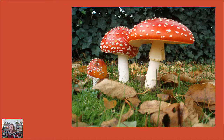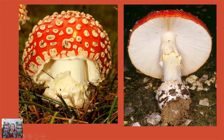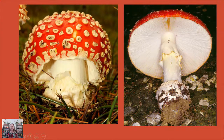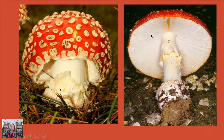Here's another picture showing one that is just opening — it's just broken open from the universal veil that it hatched from. And here's a side view, kind of like the one we'll draw, where you can see that egg-like structure it hatched out of. You can see some of the white roots or mycelium, the stipe or stalk, the annulus, and all of those nice gills.